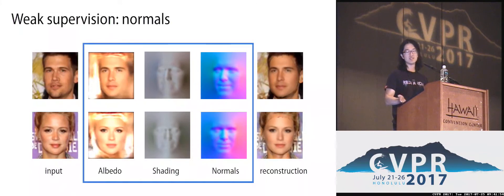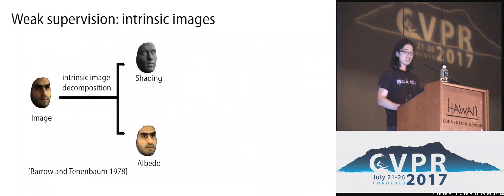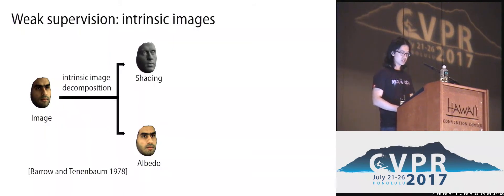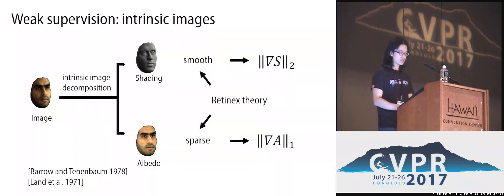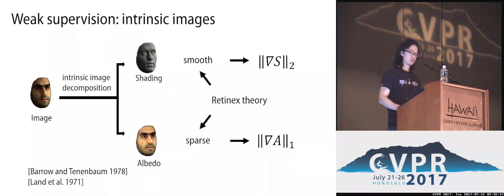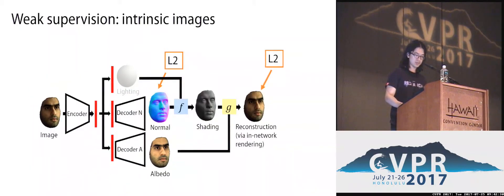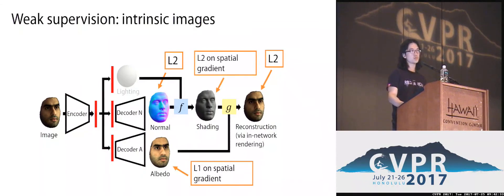Moreover, most of the shading information is still contained in the albedo image. One of the main contributions of our work is to explicitly integrate an intrinsic image decomposition into a generative network. We use the well-known Retinex model: the shading should be spatially smooth and the reflectance should be statistically sparse. So we use an L2 penalty on the spatial gradient of the shading and an L1 penalty on the gradient of the albedo, applied as loss functions to the respective network outputs.